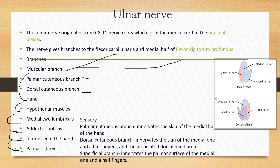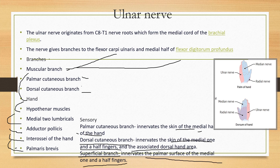The sensory branch of the ulnar nerve innervates the skin of the medial half of the hand. The dorsal cutaneous branch innervates the skin of the medial one and a half fingers and the associated dorsal hand area. The superficial branch innervates the palmar surface of the medial one and a half fingers. This diagram is very useful and easy to understand.